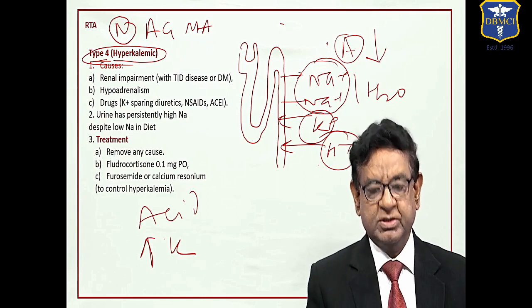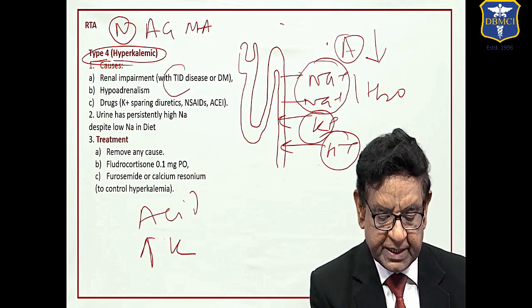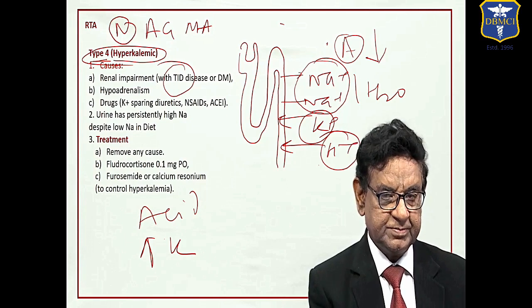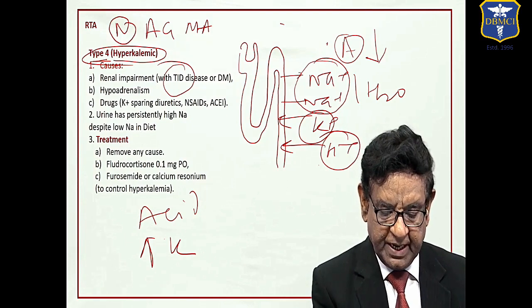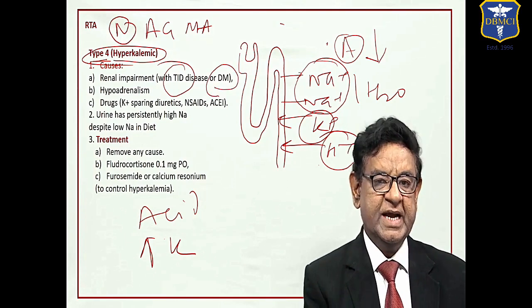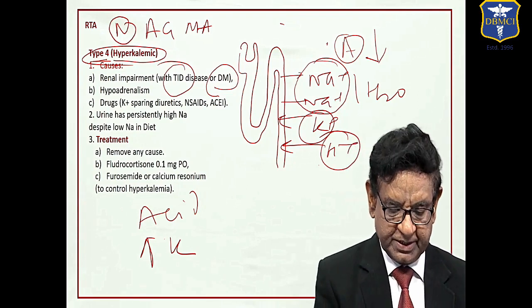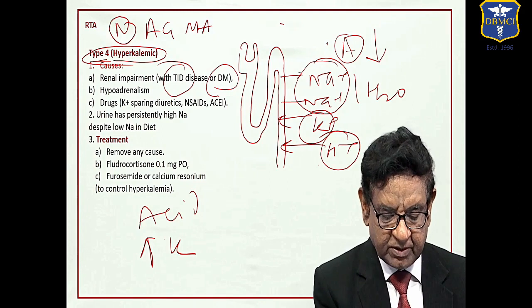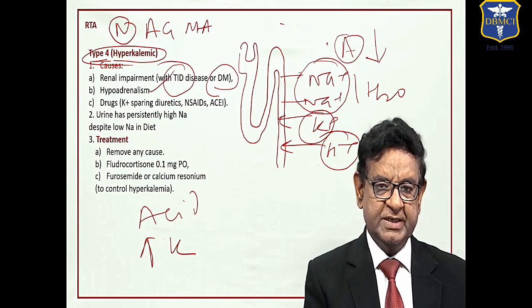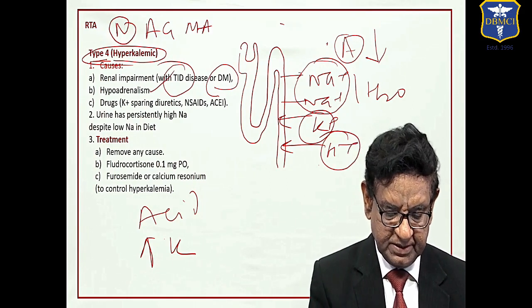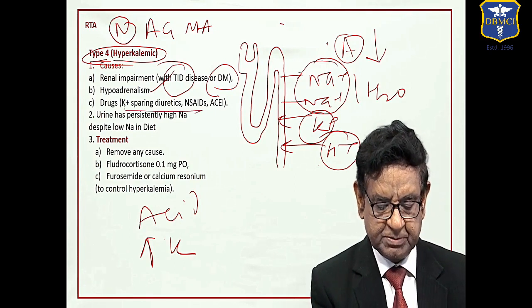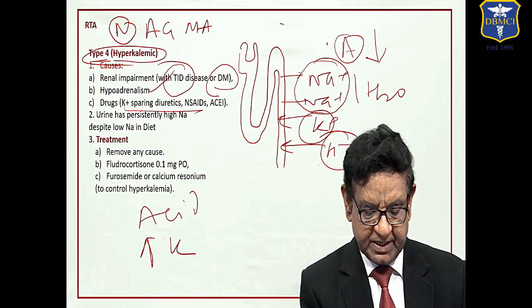What are causes? Tubular interstitial disease and diabetes. In fact, diabetes is the commonest cause of type IV RTA. Otherwise hypoadrenalism like Addison disease, drugs like potassium sparing diuretics, NSAIDs, and ACE inhibitors.